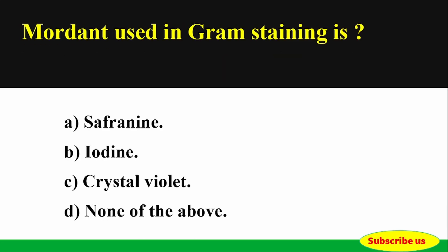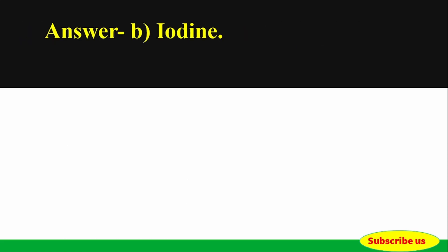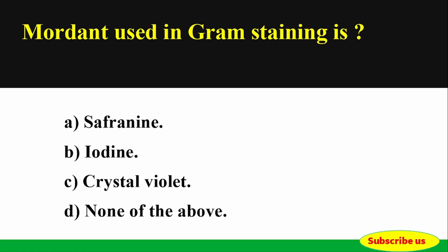Question: The mordant used in Gram staining is — Options: A) Saffron, B) Iodine, C) Crystal Violet, D) None of the above. Correct answer: Option B — Iodine. The mordant used in Gram staining is Iodine.